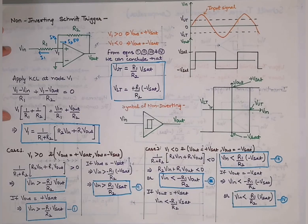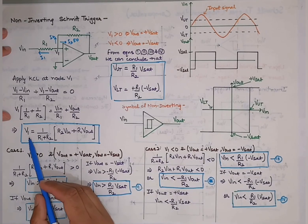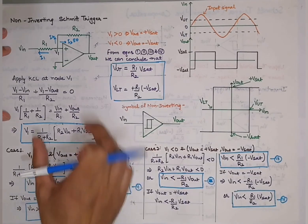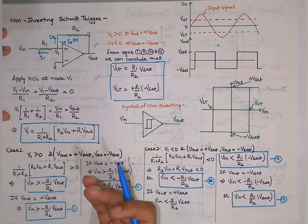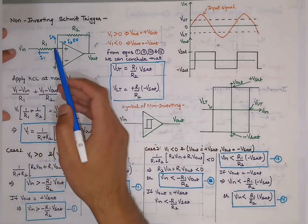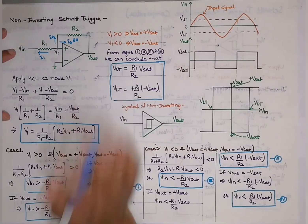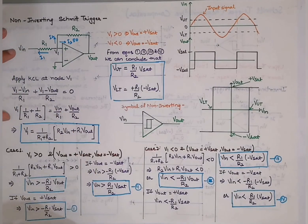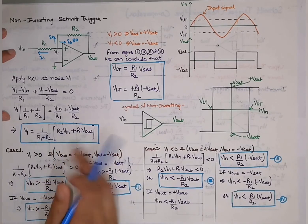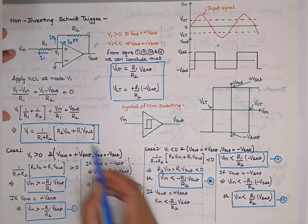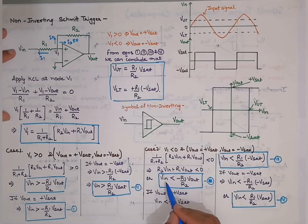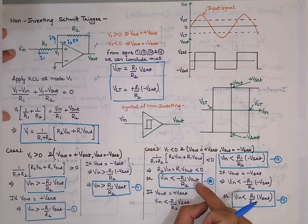We can verify with Case 2: if V1 < 0, the output will be −Vsat. To determine the condition for Vin, using the V1 formula with the right-hand side less than or equal to 0: R2·Vin + R1·Vout < 0, so Vin < −(R1/R2)·Vout. Since Vout can be +Vsat or −Vsat, we get two different values.